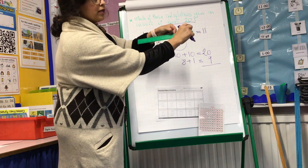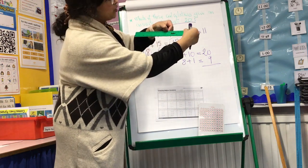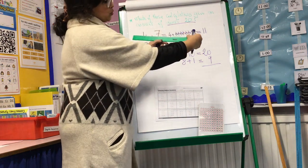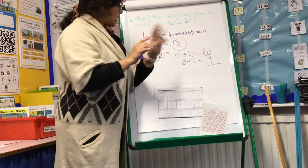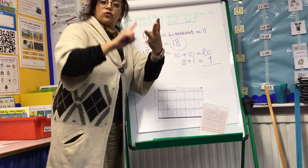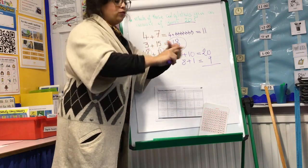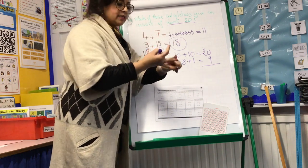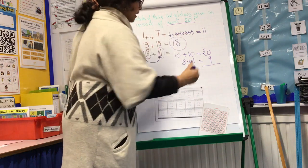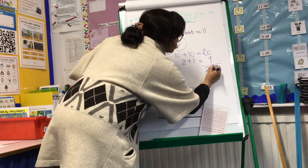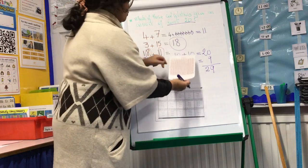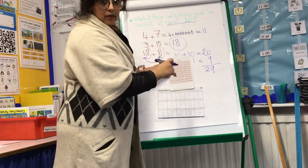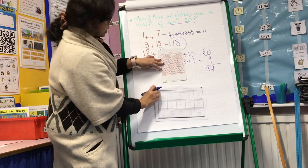Just either use the ruler and you go from 20 and add 9. You will end up at 29, or use your fingers and you go from 20, 21, 22, 23, 24, 25, 26, 27, 28, 29.